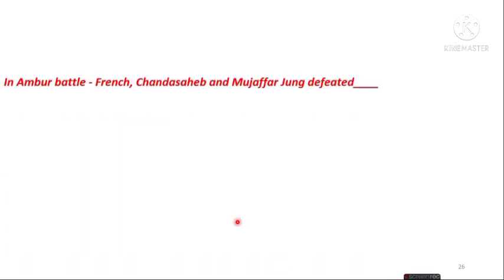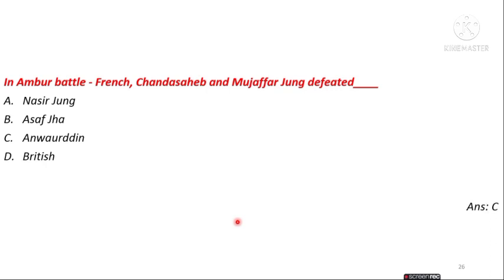The next question is: in the Battle of Ambur, French, Chanda Sahib, and Muzaffar Jung defeated whom — Nasir Jung, Asaf Jah, Nawab Anwaruddin, or British? Option C is the right answer — Nawab Anwaruddin was defeated by the French, Chanda Sahib, and Muzaffar Jung.